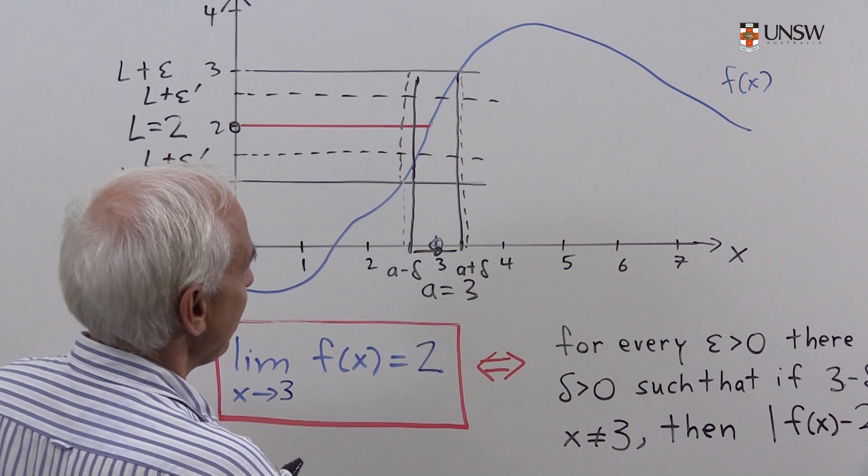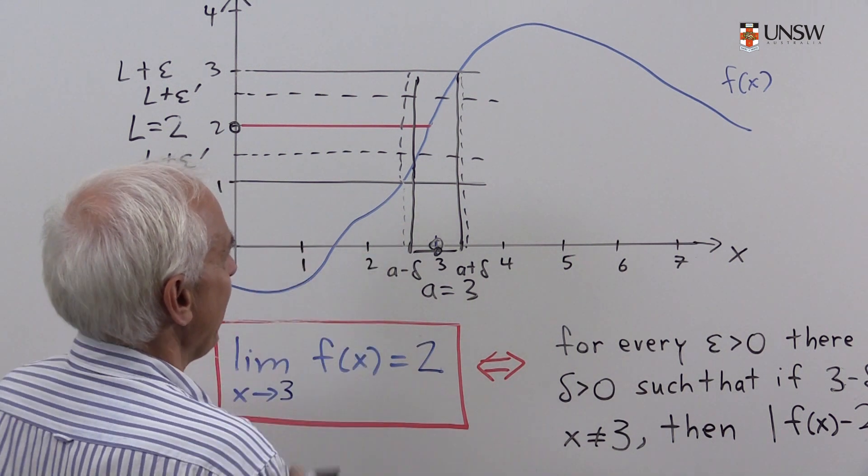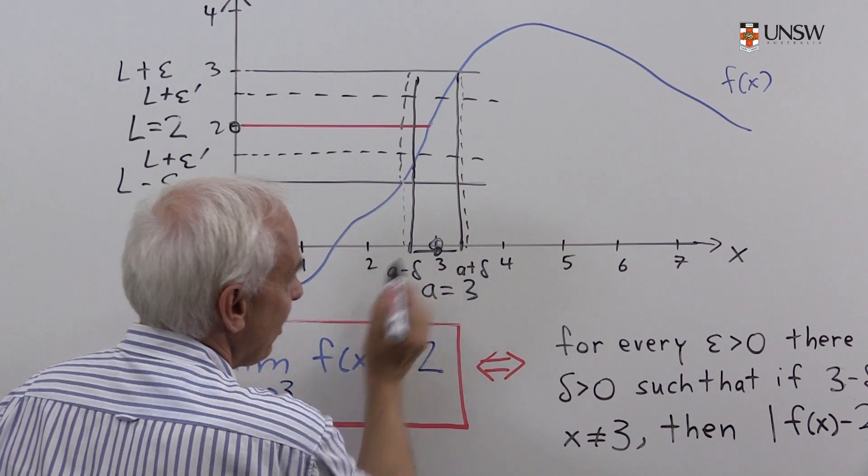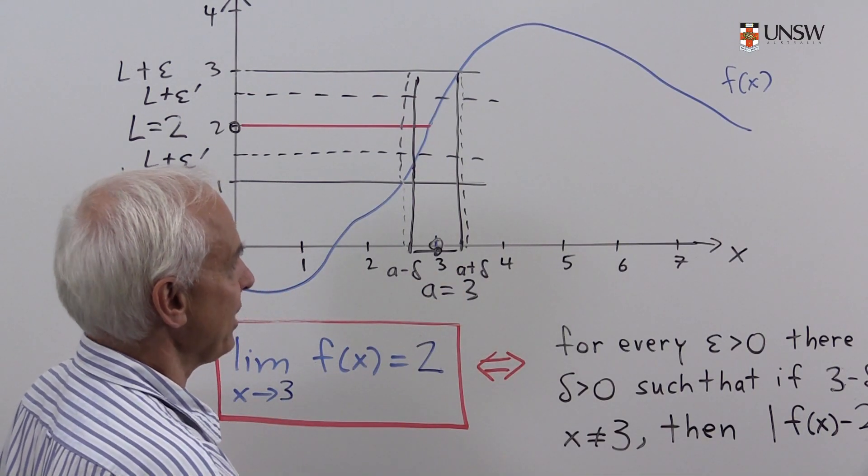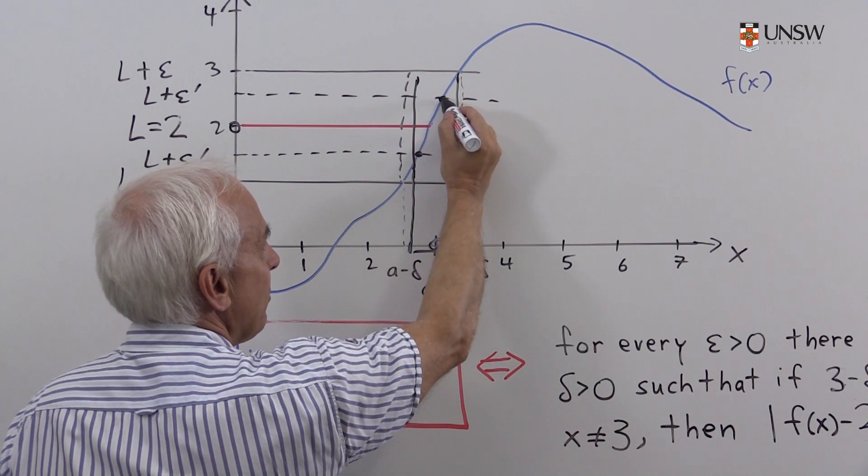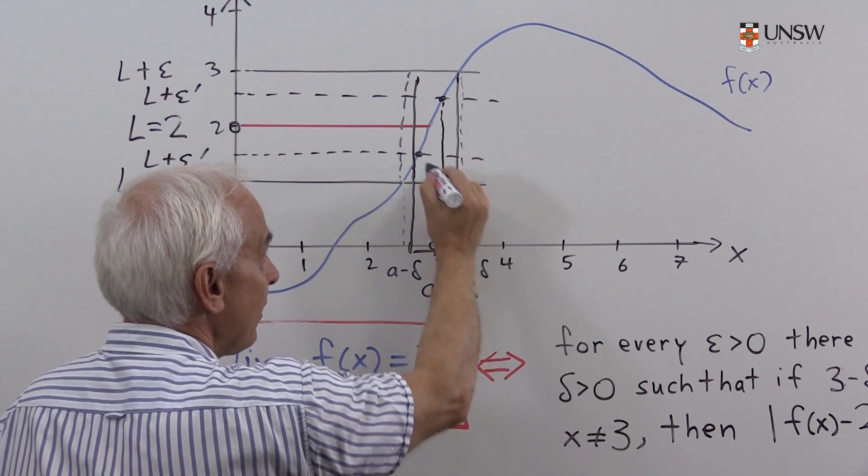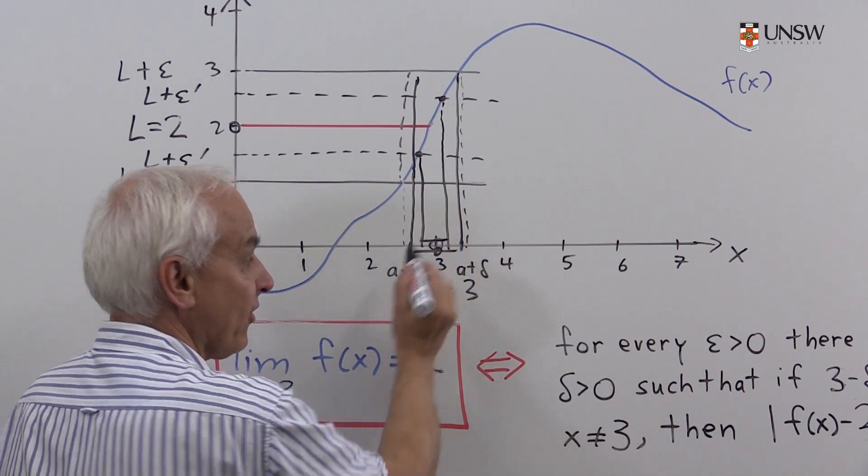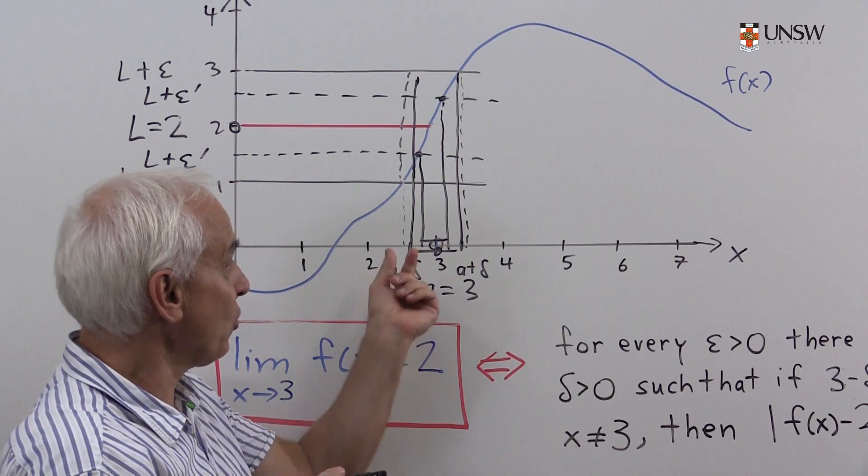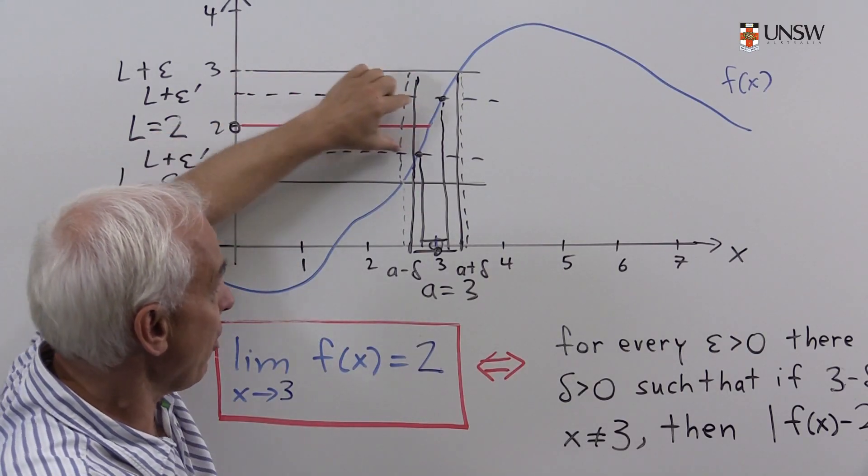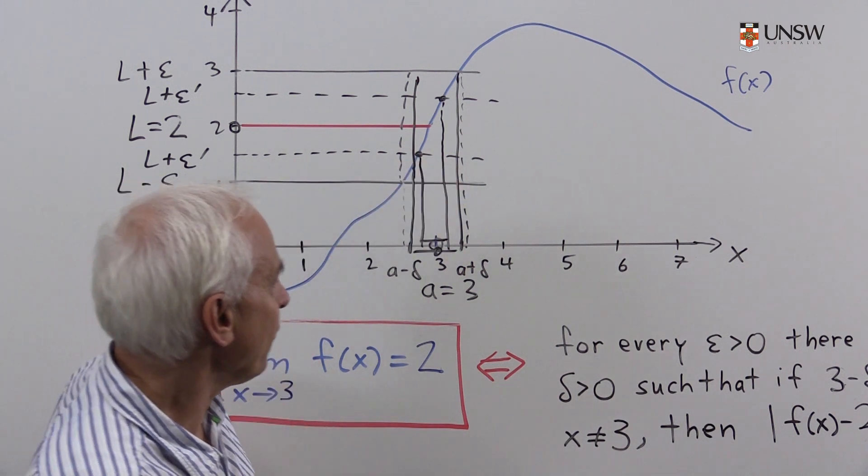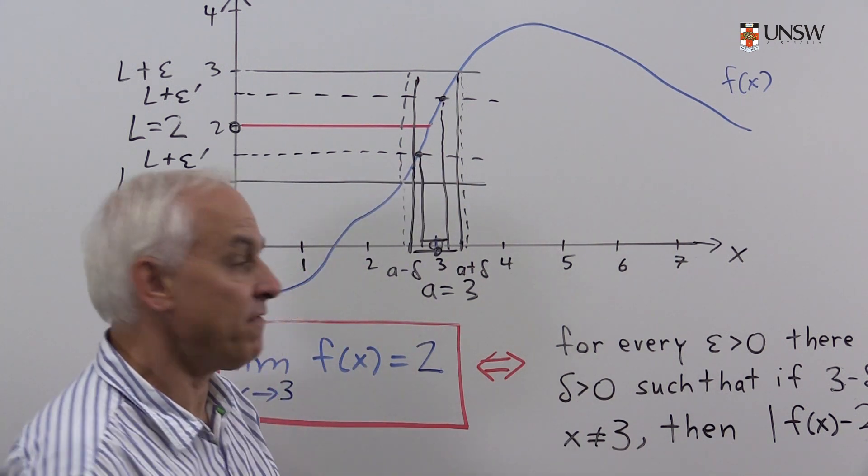Then if we wanted to get within that range, we'd have to tighten the band here. We'd have to tighten the interval around A equals 3 that we're choosing. So we'd be looking basically where this band cuts here. And we'd be looking at something like this. And then we'd require a smaller interval to be close to A equals 3 to ensure that the function's values are within this smaller band. And it looks like in this case, perhaps delta equals maybe a fifth might work.